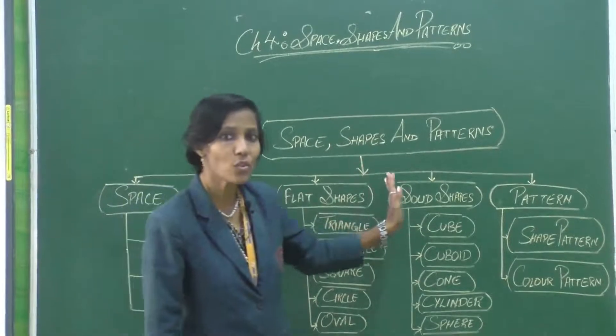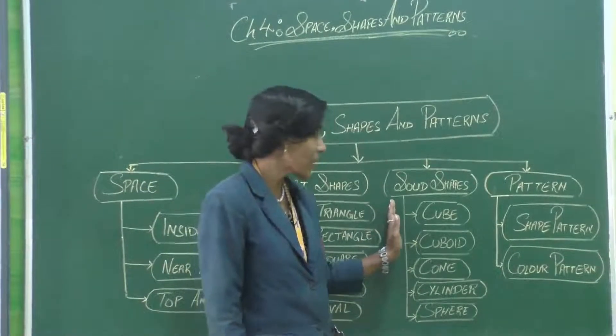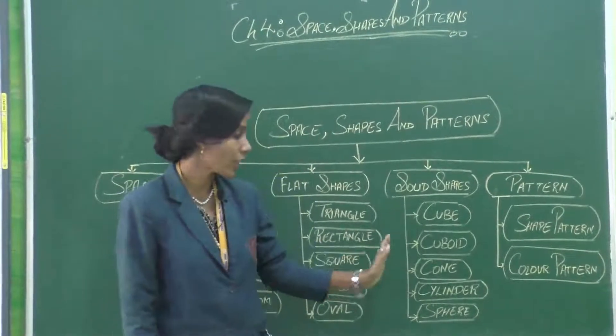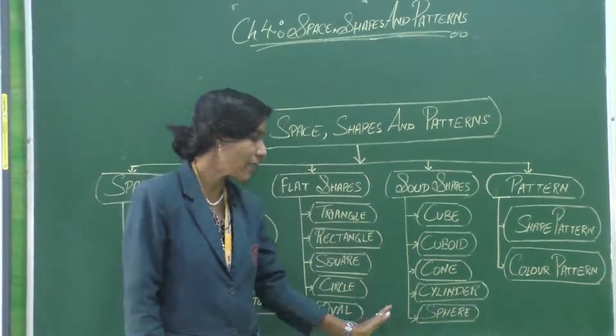Then we went to solid shapes. The solid shapes we had different types: they were cube, cuboid, cone, cylinder and sphere.